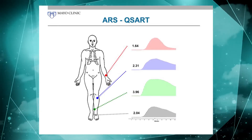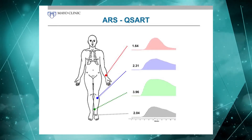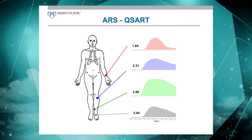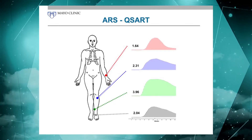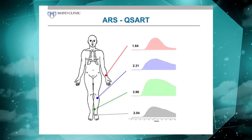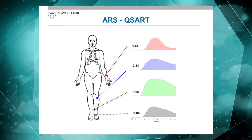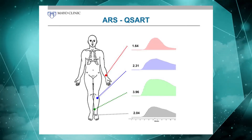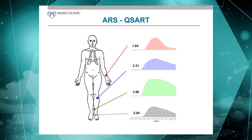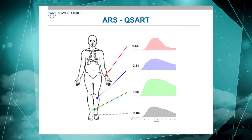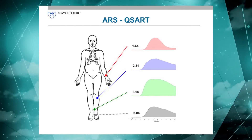We record that response at four standardized sites: one at the forearm, one at the distal leg, one at the proximal leg, and one at the foot. And we'll demonstrate all that here in a little while.